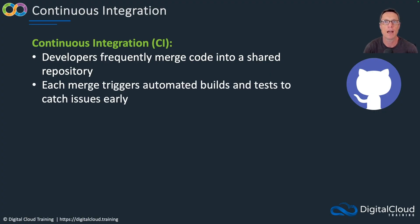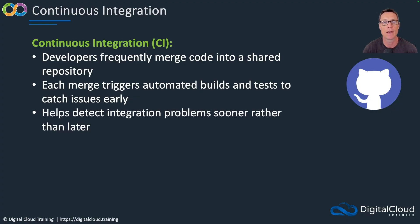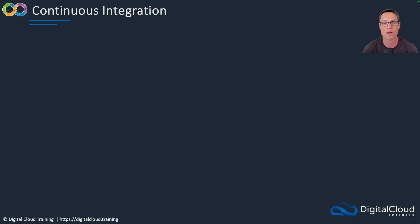With CI/CD we often have elements of automation — essentially event-driven automation. When a merge happens, when some updated code is merged into the repository, we might have some automation running off the back of that. For example, we might then be building and testing the code — compiling it and running some kind of tests to see if there are any issues with the updates that were made. This helps detect integration problems sooner rather than later. It's all about moving fast.